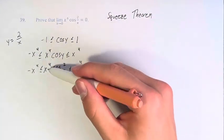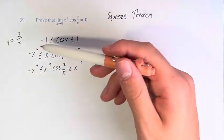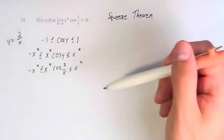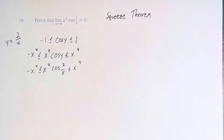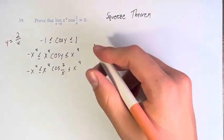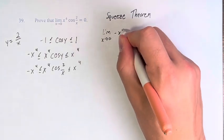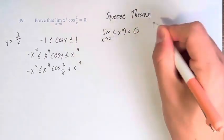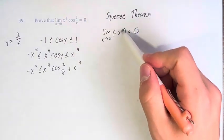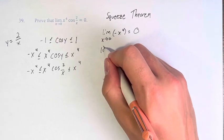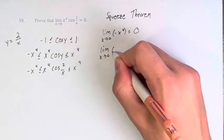This function that we're looking at the limit of is between negative x to the fourth and x to the fourth for all values of x. Therefore, since the limit as x approaches zero of negative x to the fourth equals zero—we just plug in zero to get negative zero to the fourth, which is zero—and the limit as x approaches zero of x to the fourth is also zero.